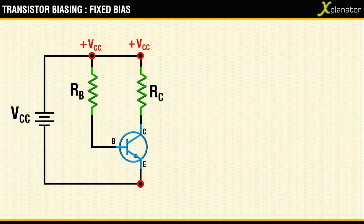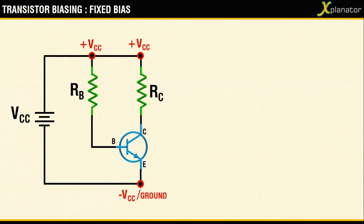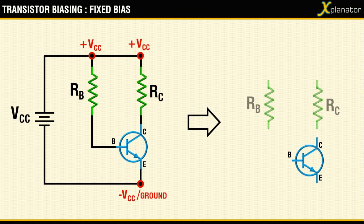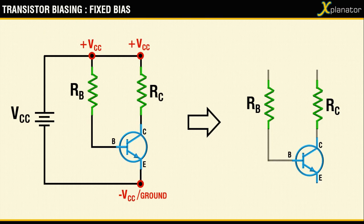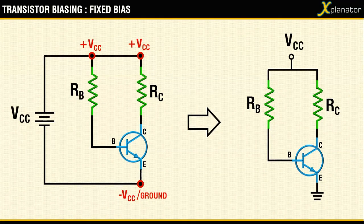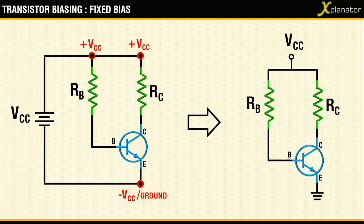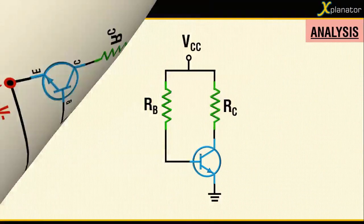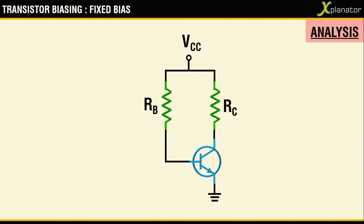So if you redraw the circuit, you will get a transistor with two resistors RC and RB connected to it, powered with a DC supply VCC, and the emitter terminal connected to the ground. We will use this configuration for the rest of the video.